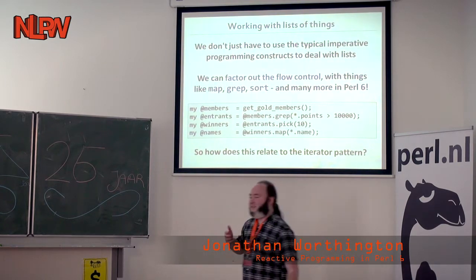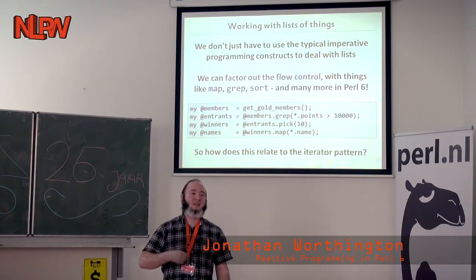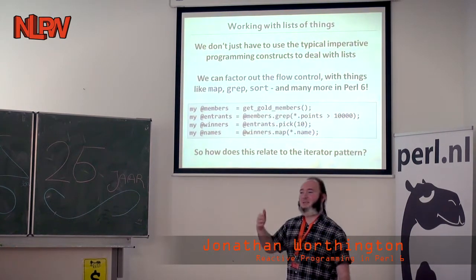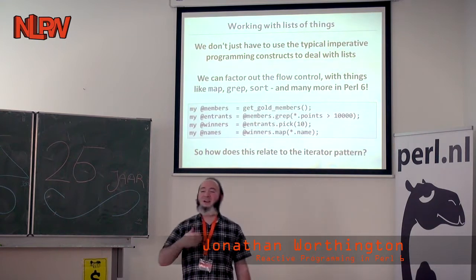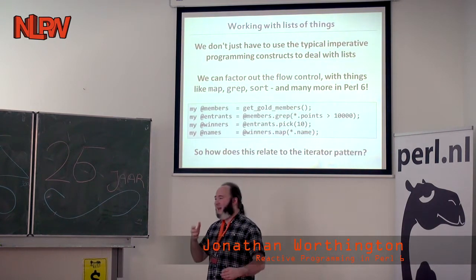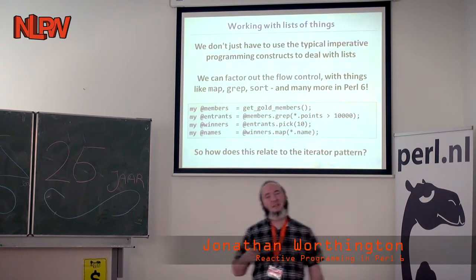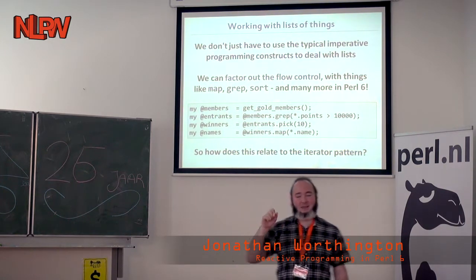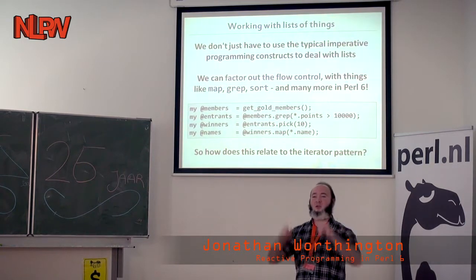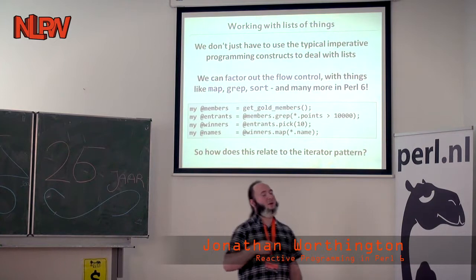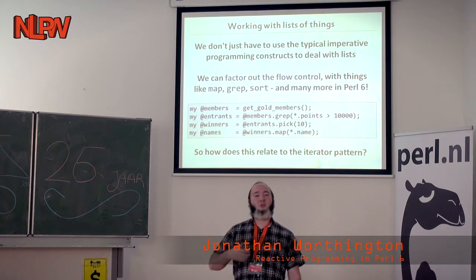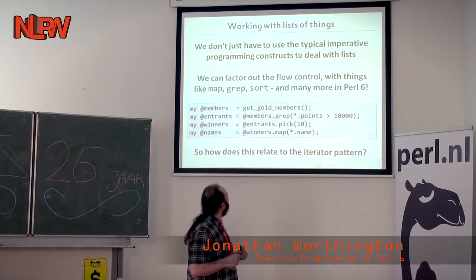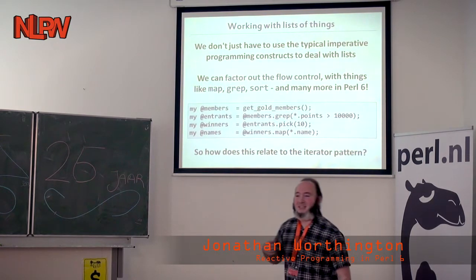If we're working with arrays and lists, we don't just have to do it all by writing loops and if statements - the normal imperative programming stuff. As we get more skill as developers, we start reaching for higher-order tools. Things like map: it's basically creating a new array, doing a for-each loop, running your piece of code, and shoving the results into the new array. Grep is similar but with an if there. These things factor the flow control out of our code. We like these a real lot in Perl 6 and we've got a whole bunch more of them.